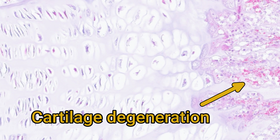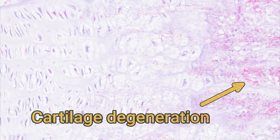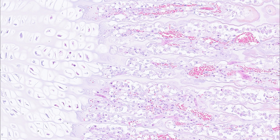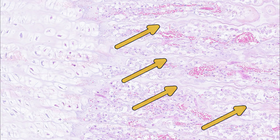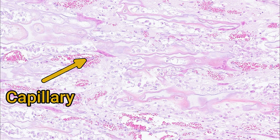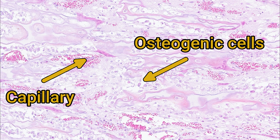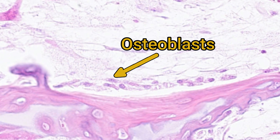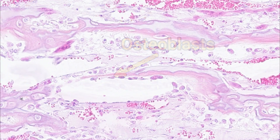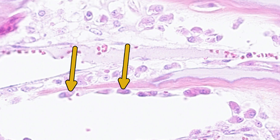Further down, we move into the zone of cartilage degeneration. Calcification limits the ability of nutrients to reach the chondrocytes, and they undergo apoptosis, a form of programmed cell death. This leaves only thin columns of cartilage matrix with empty space between them. This empty space is quickly invaded by capillaries from the marrow cavity of the diaphysis, which allows population by osteogenic cells — these poorly differentiated, small and numerous cells that will differentiate into osteoblasts lining the cartilage matrix ready to convert it into bone.